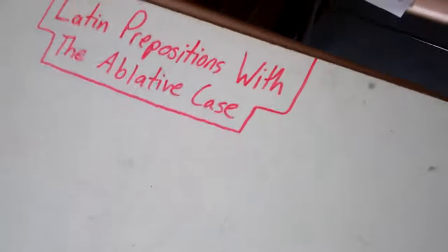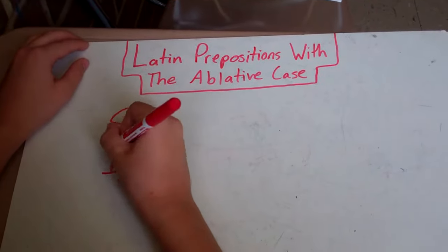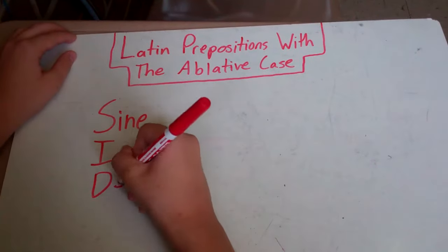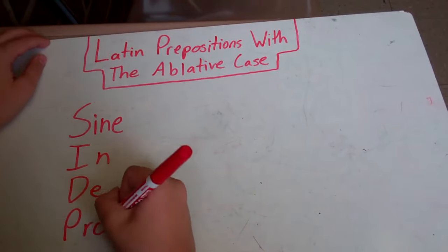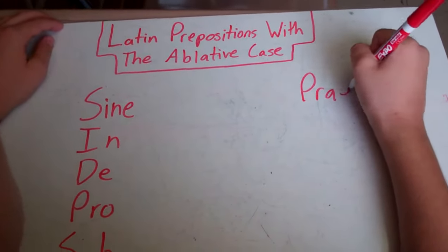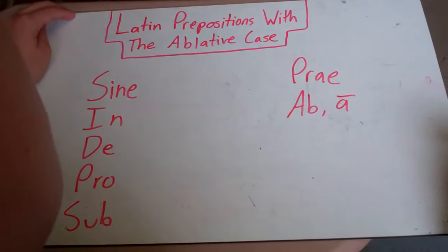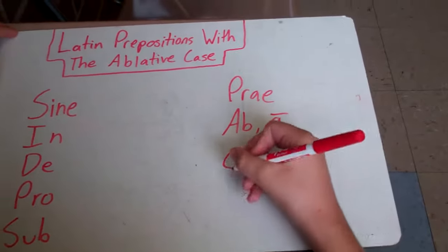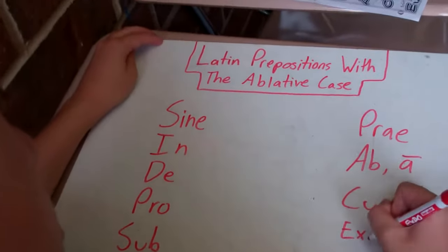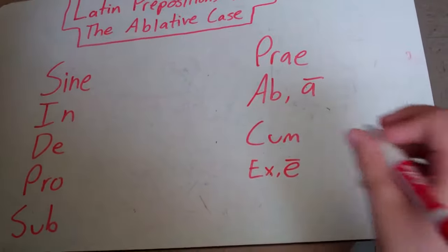We're going to start by listing some. There's sine, in, de, pro, sub, prae or with the macron, cum, ex or e, and then there's also two others, but we'll get to that later.